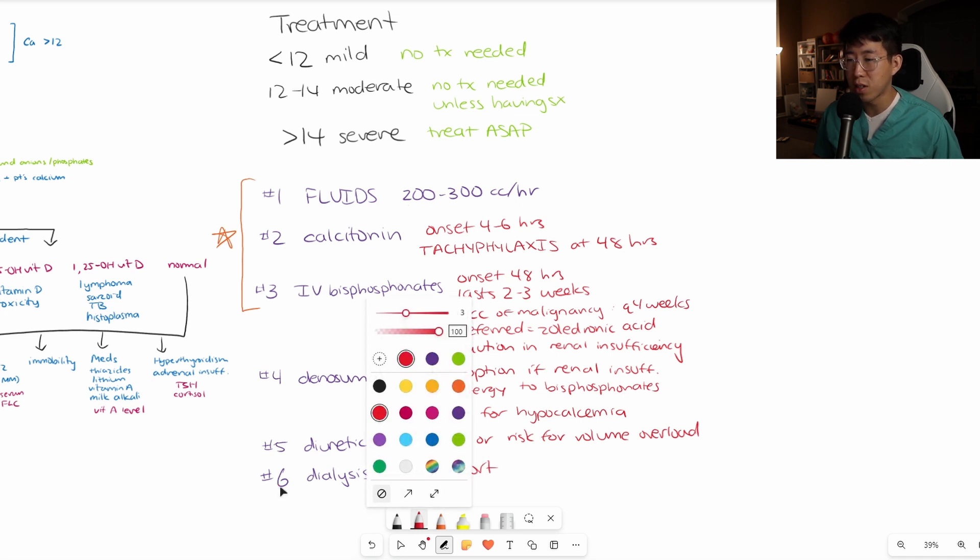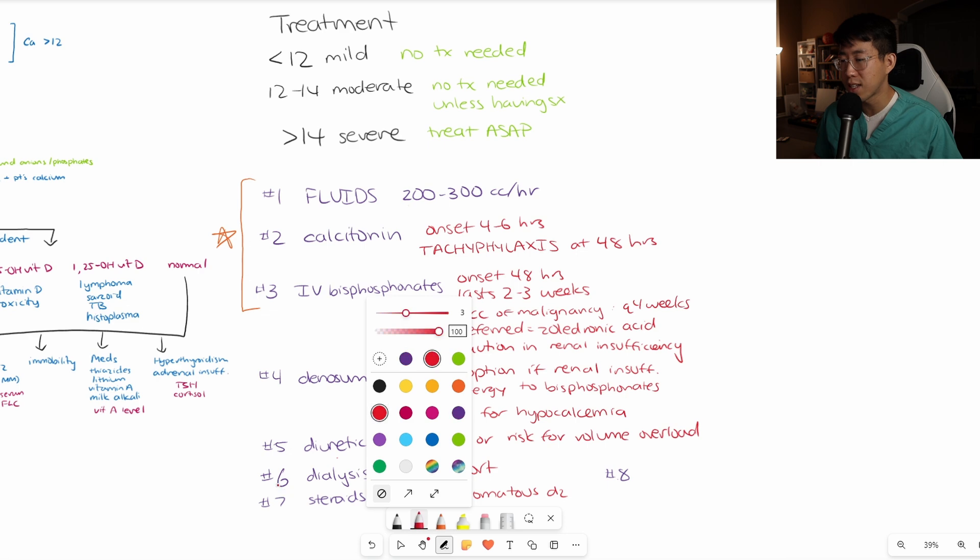We have a couple of disease-specific treatments. Steroids. If they have granulomatous disease, steroids help prevent that one-alpha-hydroxylation of 25-hydroxyvitamin D. If somebody has sarcoidosis, for example, steroids is an indicated treatment. The last one is you'll sometimes see a medication called cinacalcet. This can be used for patients with primary hyperparathyroidism, but it's kind of an off-label use. It's not really one of our first-line medications.